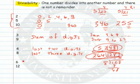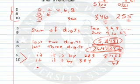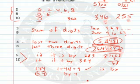Our last rules are for 6 and 12, and they have nothing new to learn — they use old rules. A number is divisible by 6 if it is divisible by both 2 and 3. It is divisible by 12 if it is divisible by both 3 and 4. So if you look at 144: is it divisible by 2? Yes. By 3? 1 plus 4 plus 4 equals 9, so yes. Therefore it is divisible by 6. Is 144 divisible by 4? Yes. And by 3? Yes. So it is also divisible by 12.